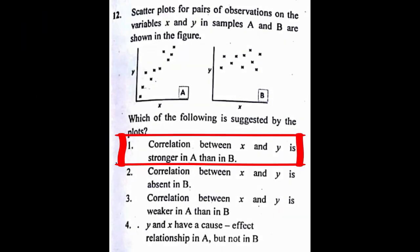Next problem, problem number 12: Scatter plots of pairs of observations on the variables X and Y in samples A and B are shown in the figure. Which of the following is suggested by the plots? The correct answer to this problem is option 1, correlation between X and Y is stronger in A than in B.